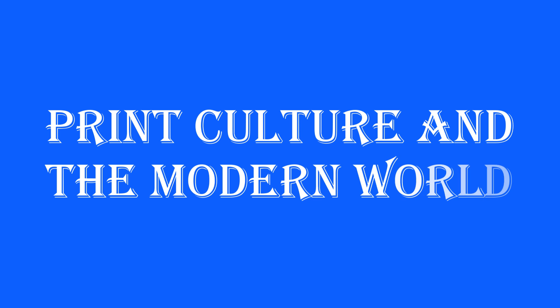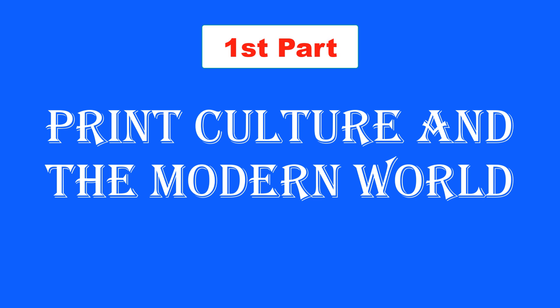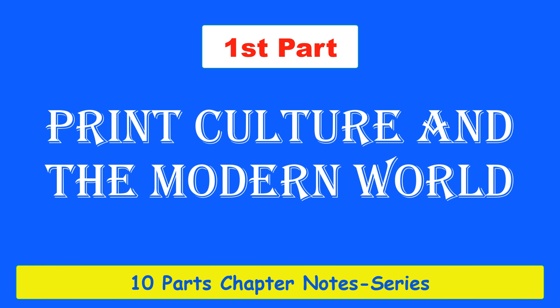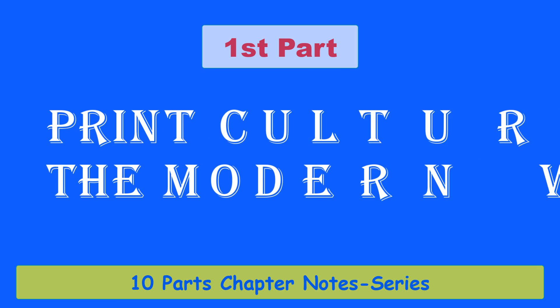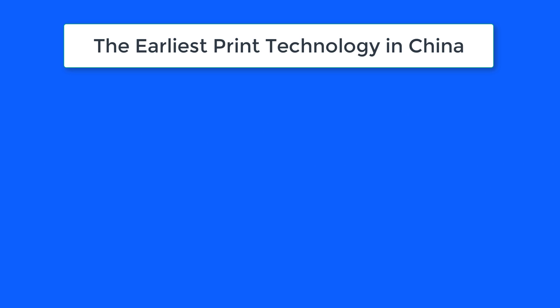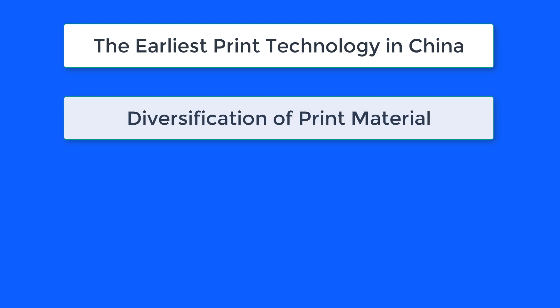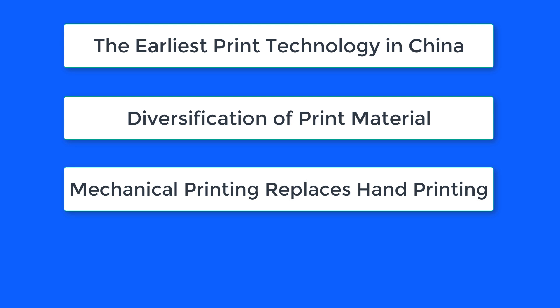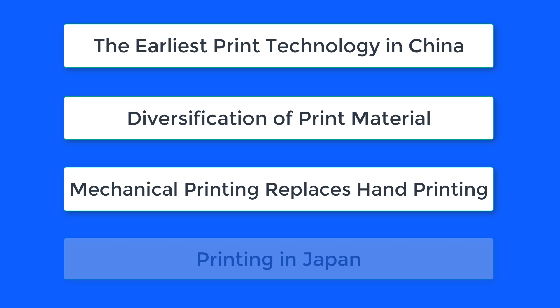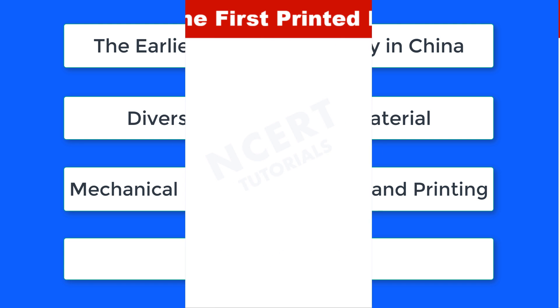Hello and welcome. With this video we are going to study the chapter of Print Culture in the Modern World. This is the first part of this tutorial series and we will finish this tutorial series in 10 parts, with the 10th part being the chapter summary. In this first part we will cover the earliest print technology in China, diversification of print material, mechanical printing replacing hand printing, and printing in Japan.